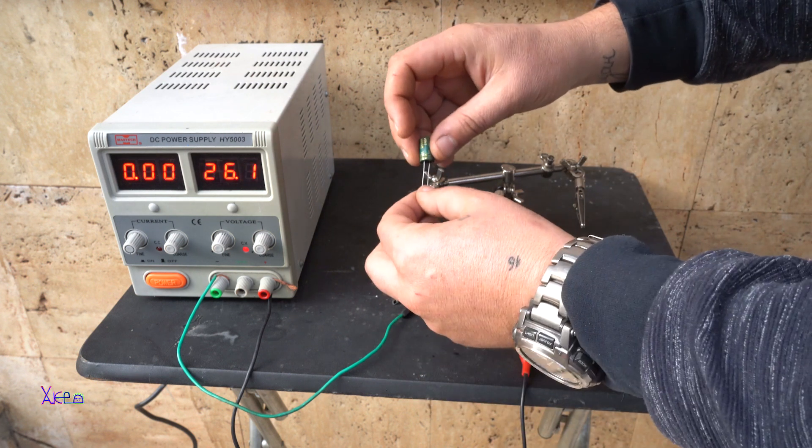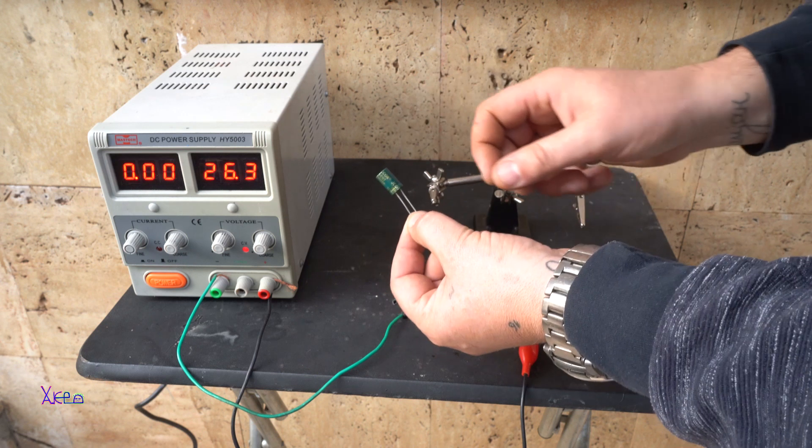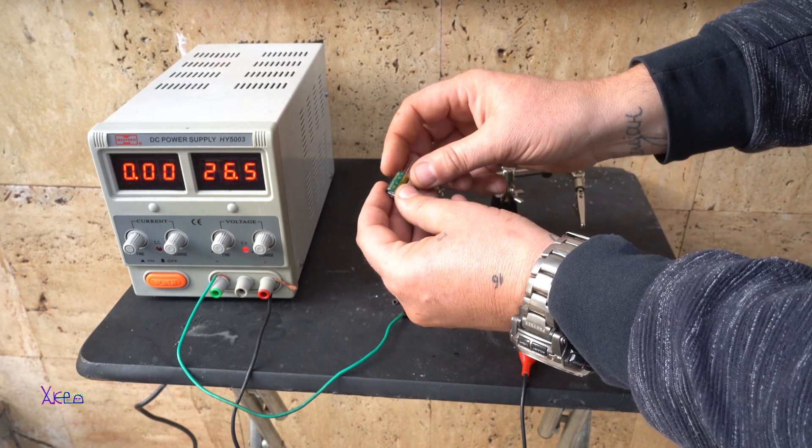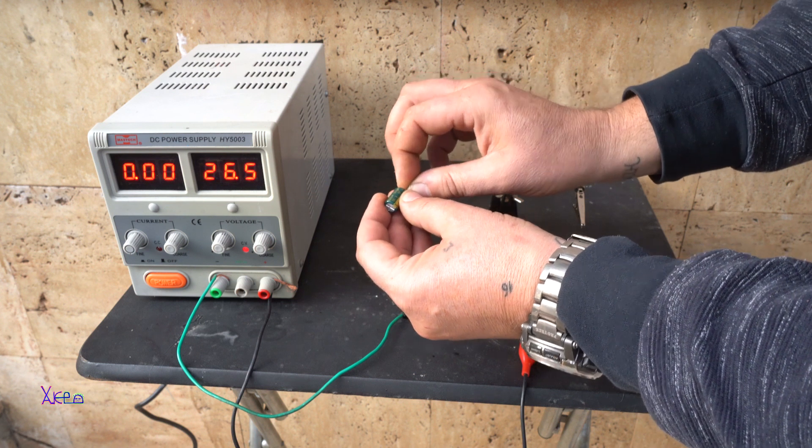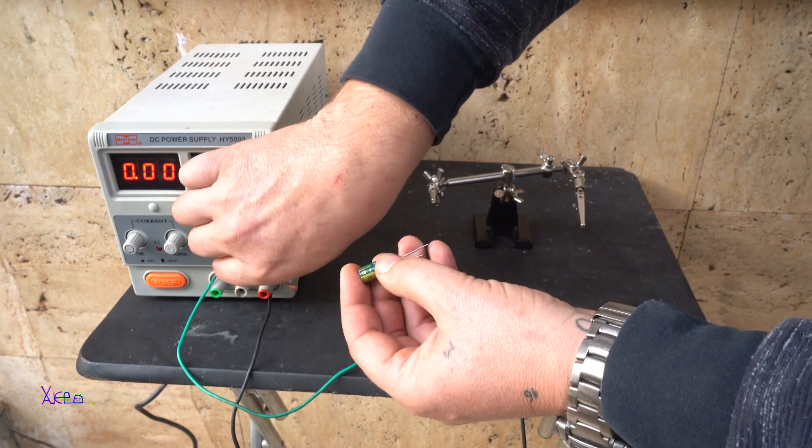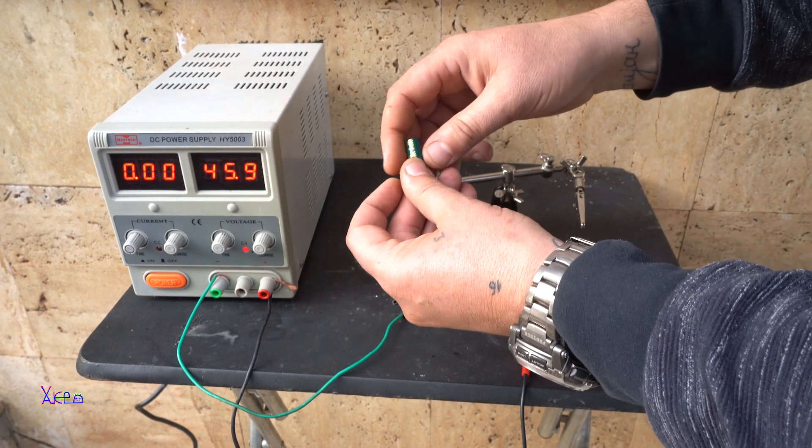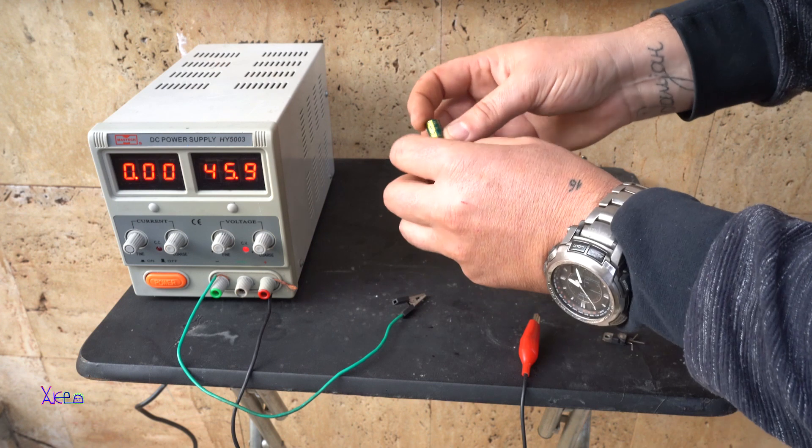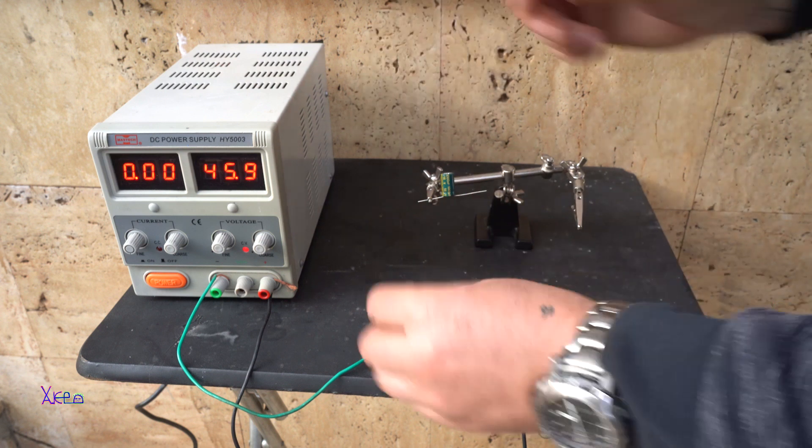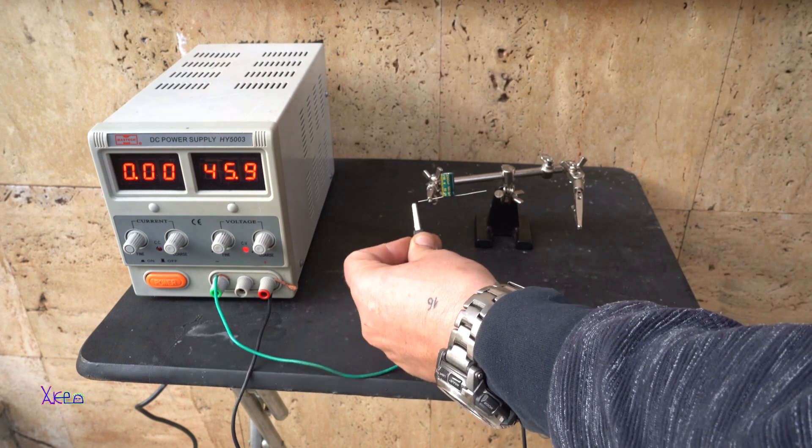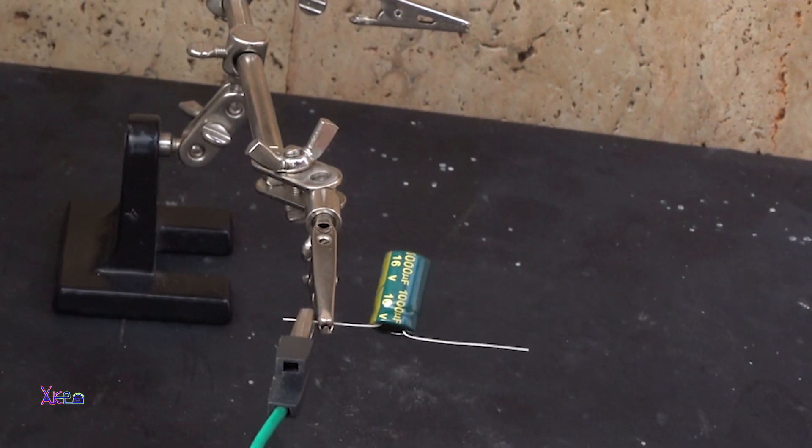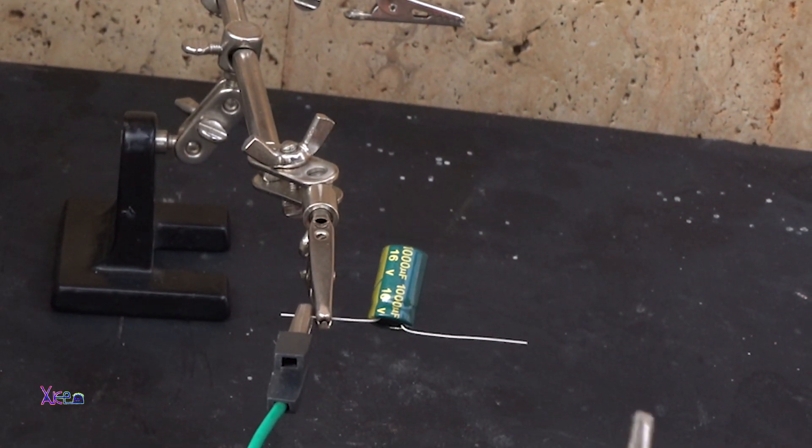And just for fun, I will explode one more capacitor. But this one is 1000 microfarads at 16 volts, and I'm gonna put 50 volts... 45, okay. Let's try it, this is negative... okay, power on.